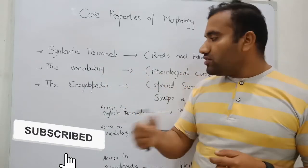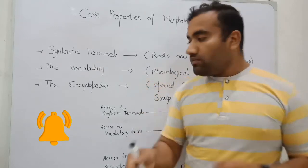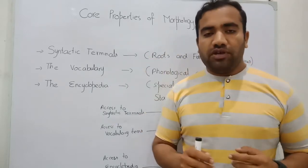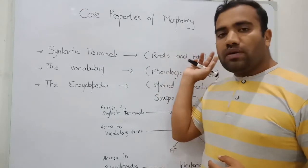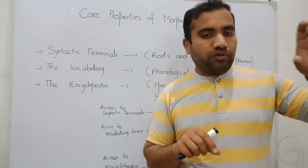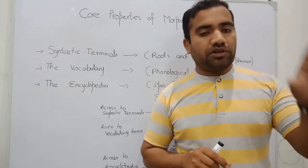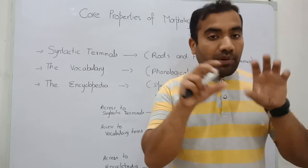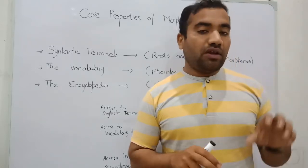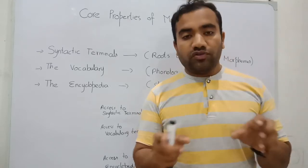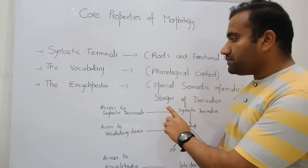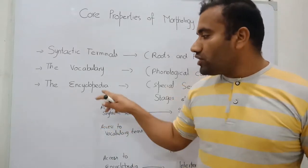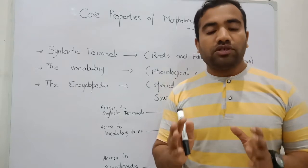The second core property is the vocabulary item. What is the vocabulary item? It is phonological content. When we have selected the two types of morphemes — the roots and the functional morpheme — after that we will put the phonological content onto that particular item involved in our derivation. At this step we apply the phonological content and give it phonological form. This is the second step, at which point the phonological content of the word has been assigned.